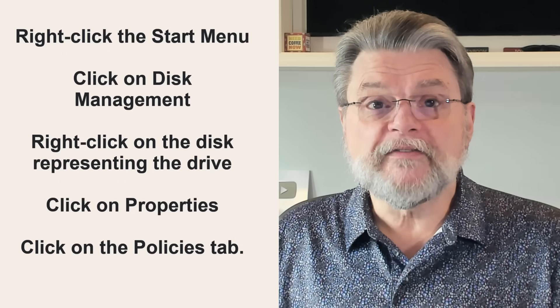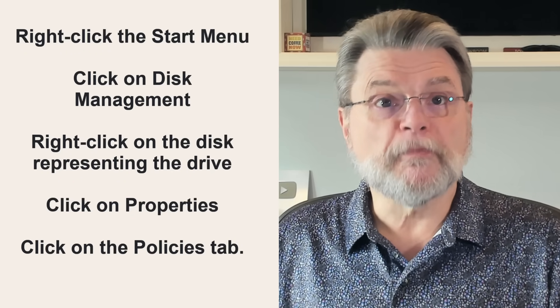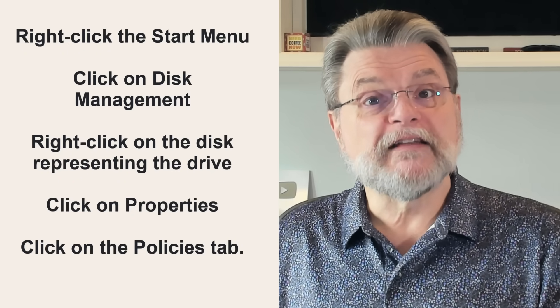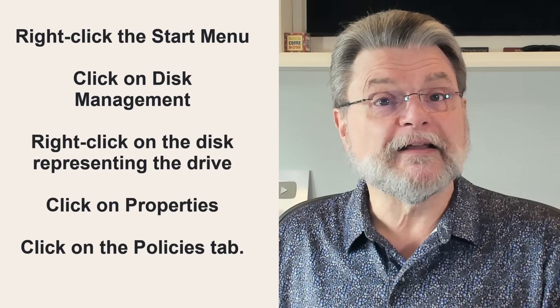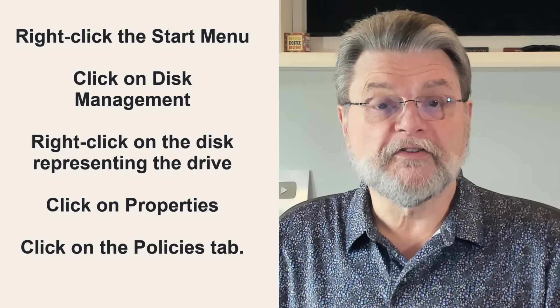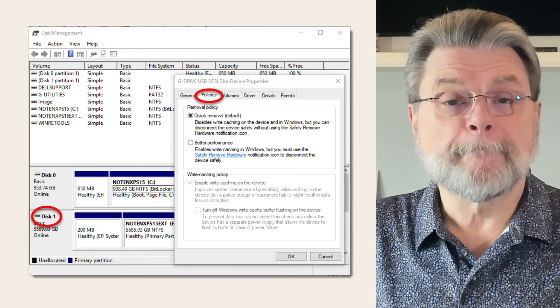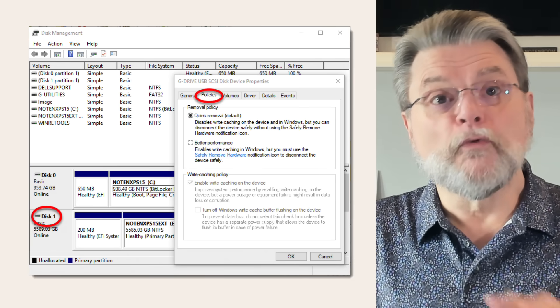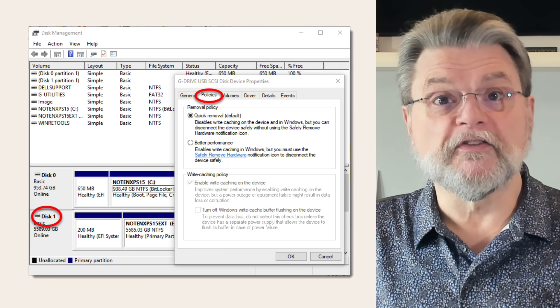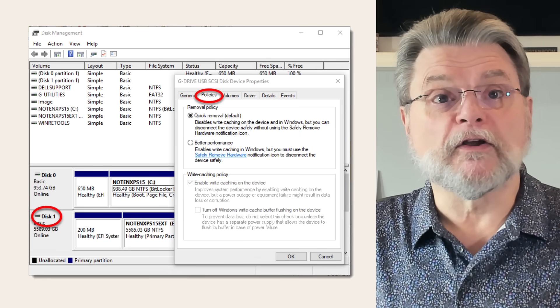You can see and change what Windows has selected for your drive. With the drive attached, right-click on the Start menu, click on Disk Management, right-click on the disk representing the drive, and click on Properties. Then click on the Policies tab. You'll see something like this. The Removal Policy shows the current setting, and you can change it if you like and click OK.